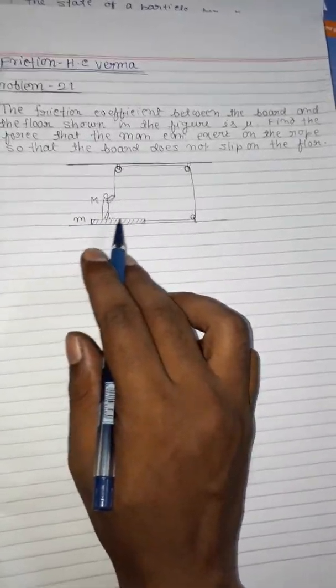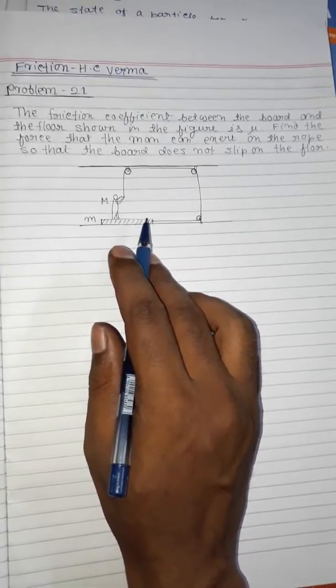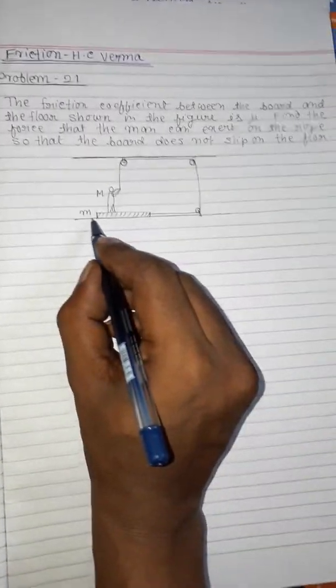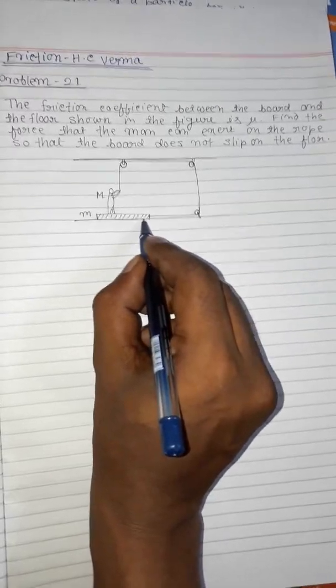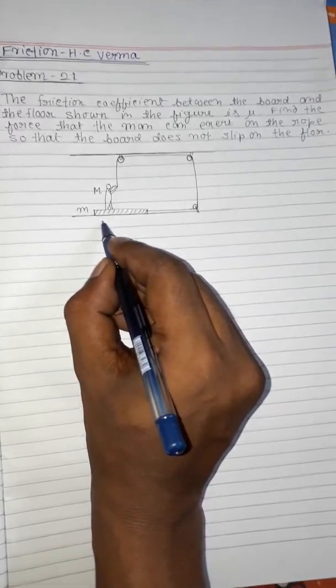The friction coefficient between the board of mass M and the surface is mu.